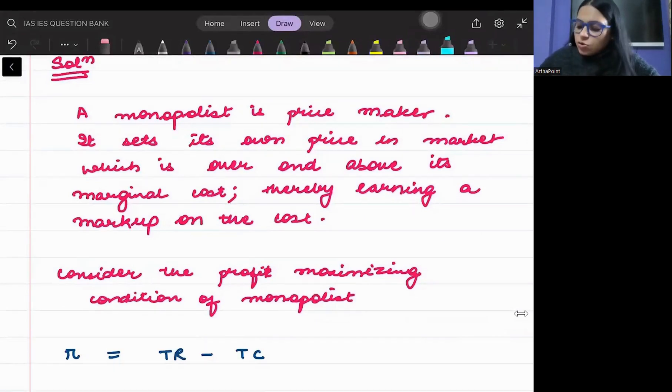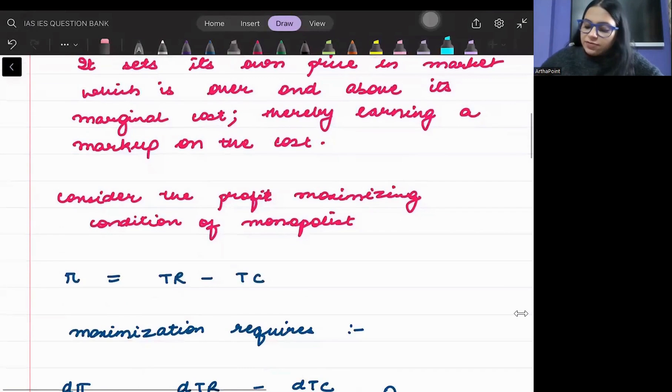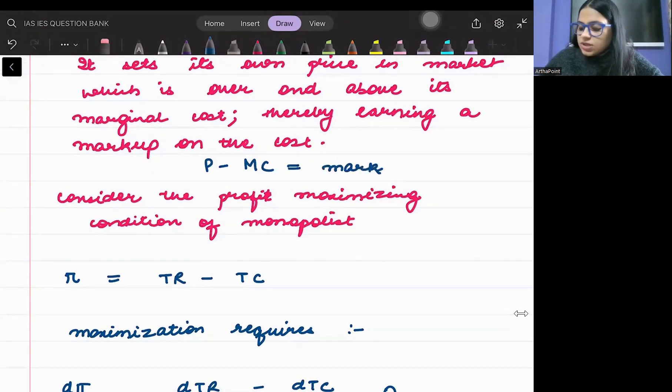Let's see how I have written the answer. We know that the monopolist is a price maker. He is not a price taker. He sets his own price in the market which is over and above the marginal cost, thereby earning a markup on the cost.